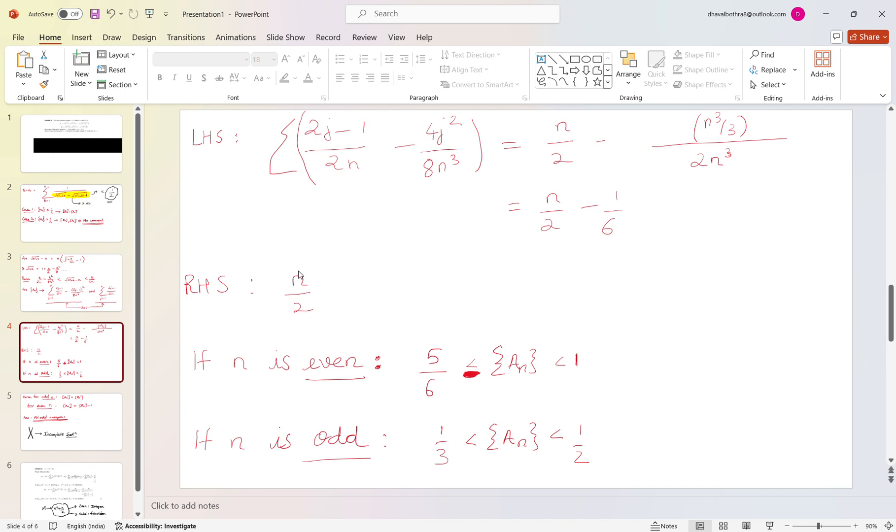So RHS being a whole number, we can say that the fractional part of a_n will be less than 1 and greater than that 1 minus 1 by 6, that is 5 by 6. Whereas if n is odd, for example 3, then the RHS will become 1.5 and LHS will become 1 and 1 by 3 something, 1.33 for example.